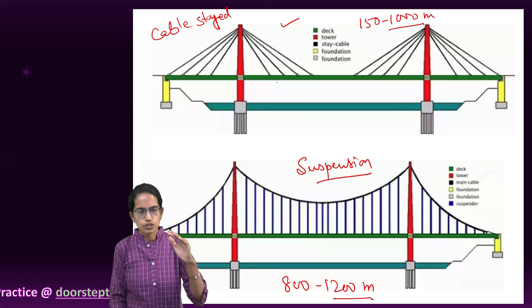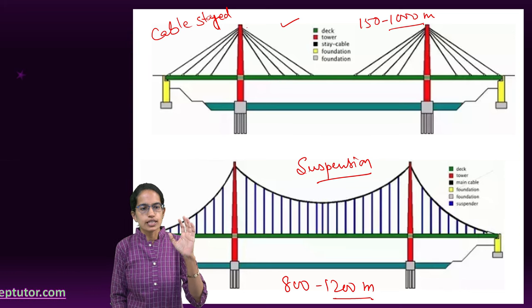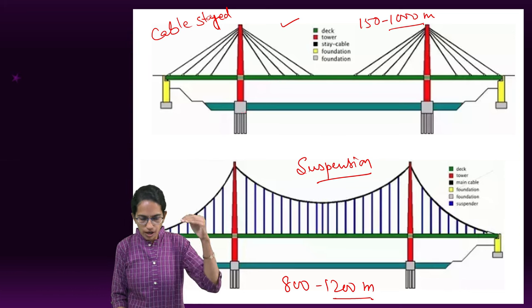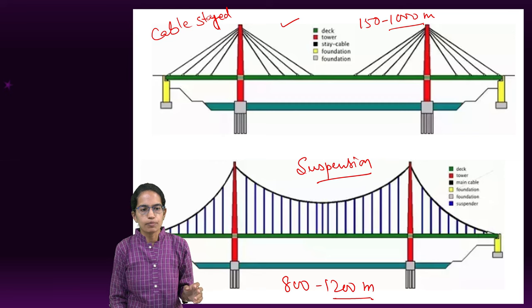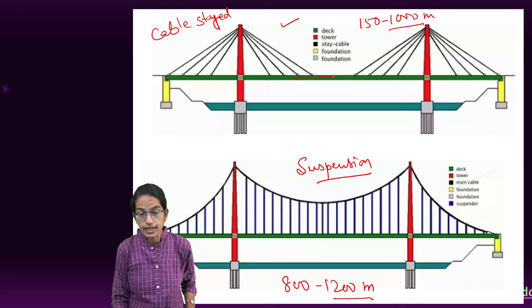As you can see, in the case of cable-stayed bridge, there is a tower embedded in the foundation, and then you have the cable stays which connect to the deck directly.